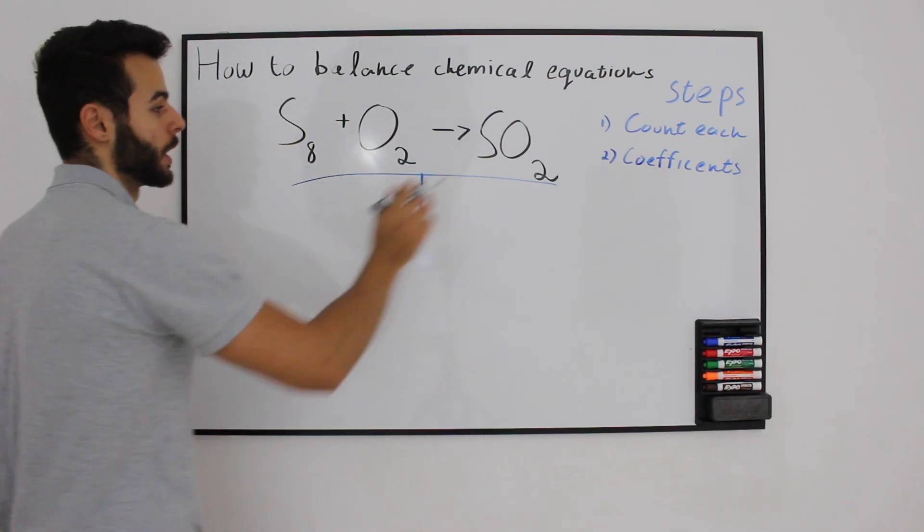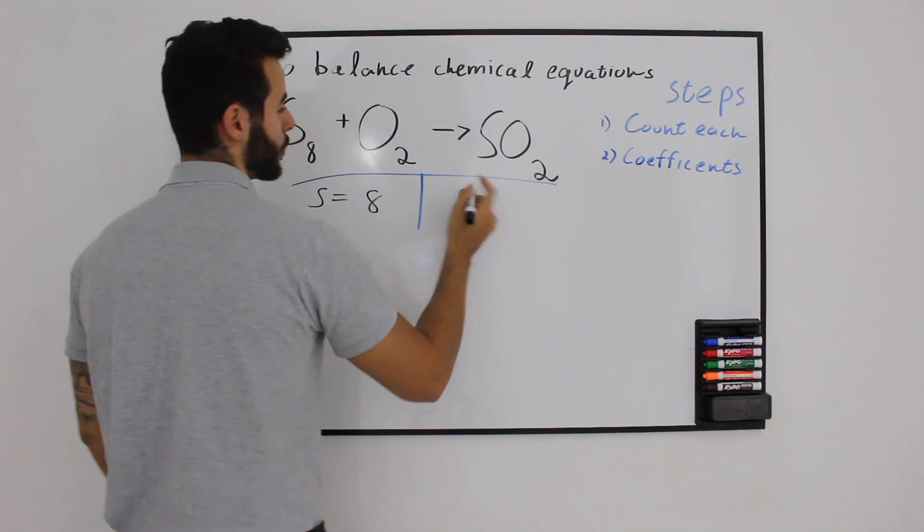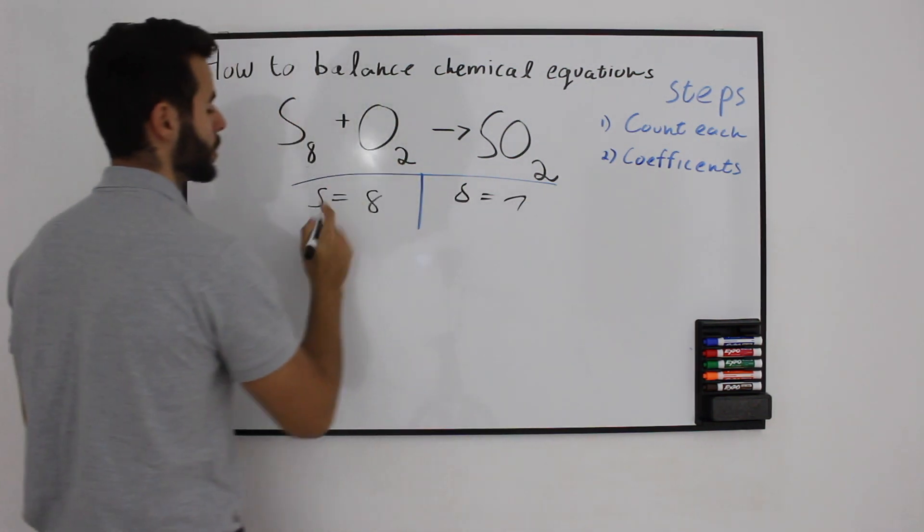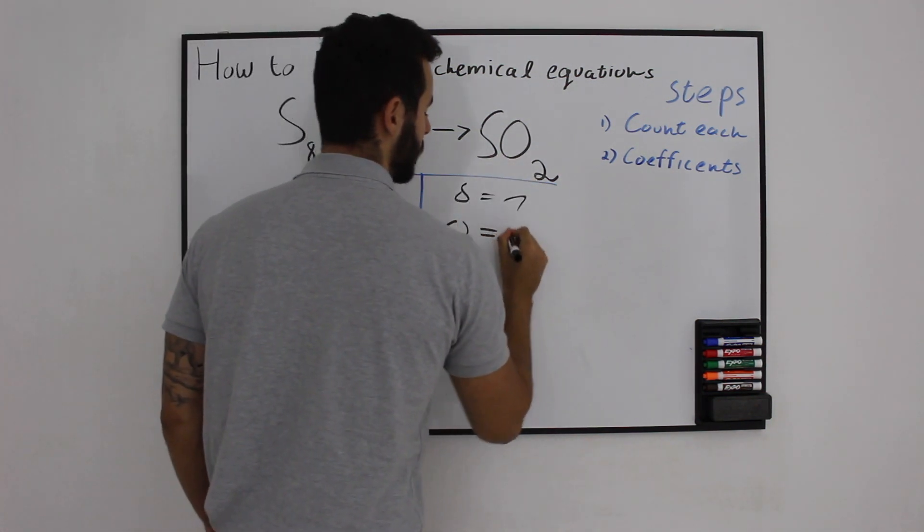So we have S8 and O2. We have 8 sulfur on one side, 1 on this side. Oxygen, we have 2 on this side and 2 on this side.